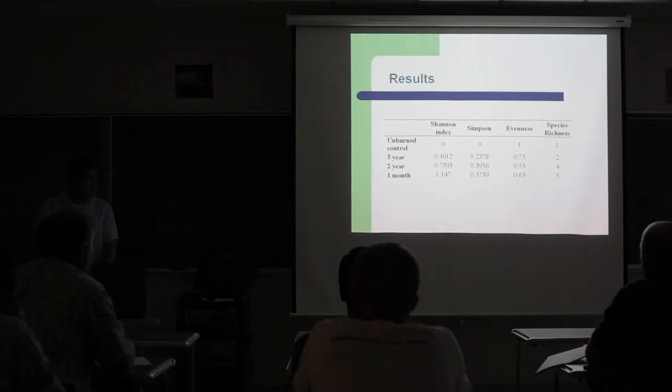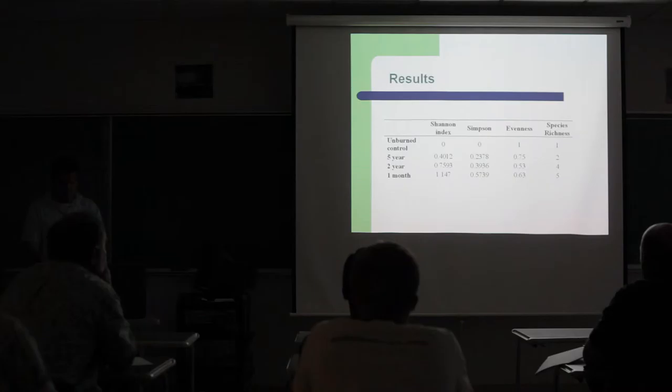Here we have the different indices of diversity, evenness, and species richness. Species diversity and richness was greater in plots that were burned one month than two years ago. And then those that were burned fifteen and five, the fifteen had a species diversity of zero, richness of one. The five-year had two species, two-year had four, one month had five.